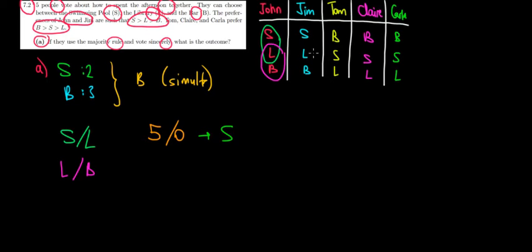L over B, John. L over B, Jim. And that's it. The remaining three guys would vote bar over L. All of them prefer bar over L. So we would have two versus three, meaning that bar would win. Now one more set.